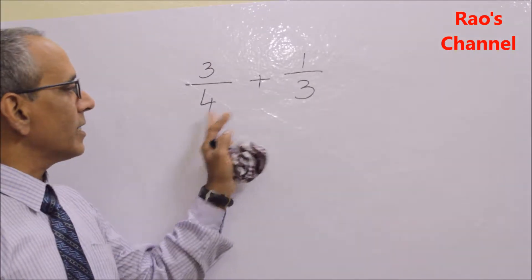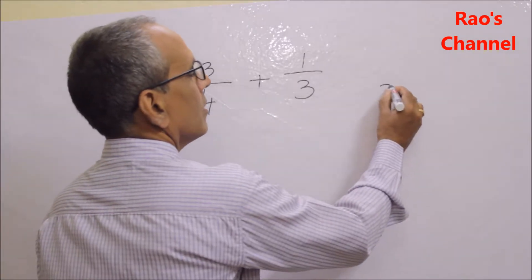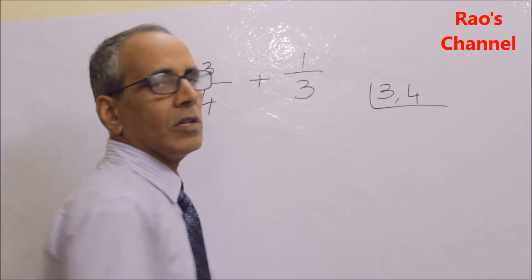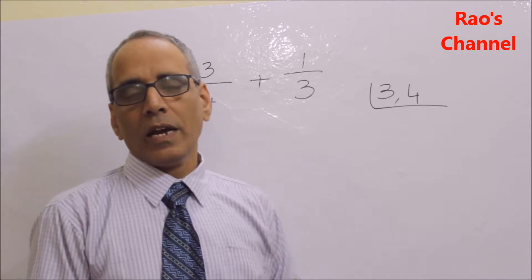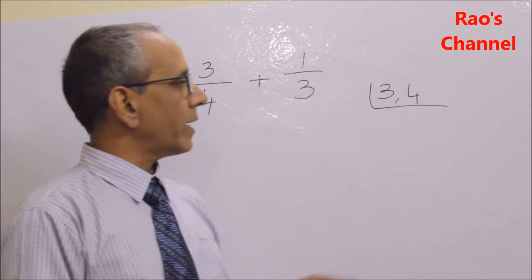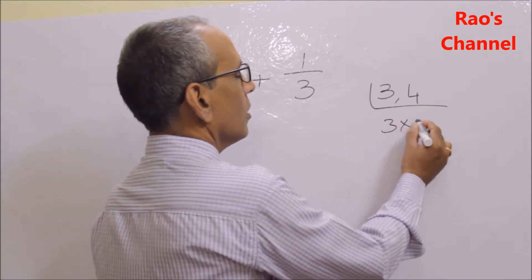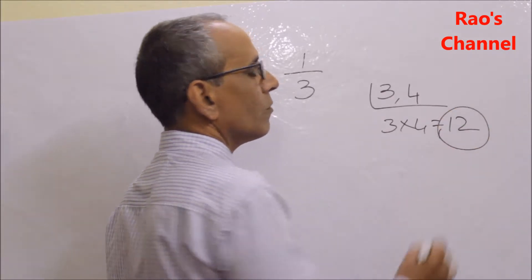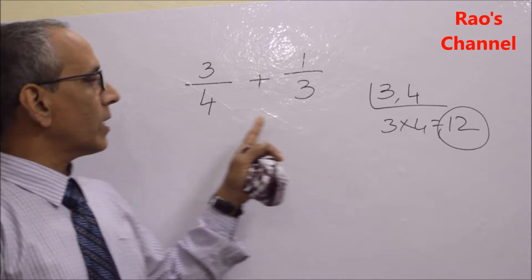Let's find the LCM of 4 and 3 in the rough column. When we look closely, 3 and 4 are co-primes — there are no common factors. The LCM of co-primes is their product, so the LCM of 3 and 4 is 3 × 4, which equals 12.